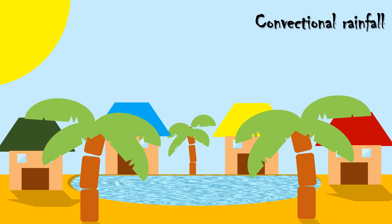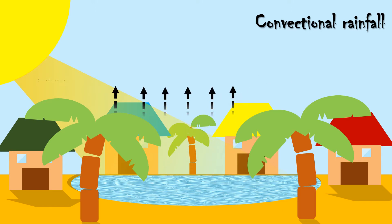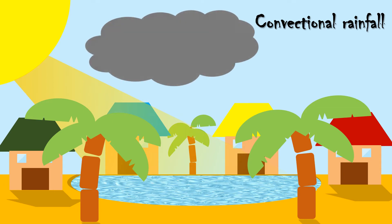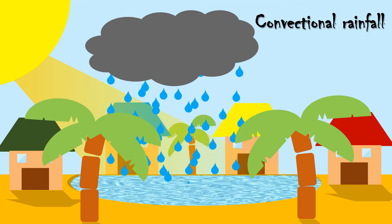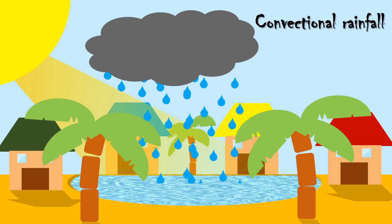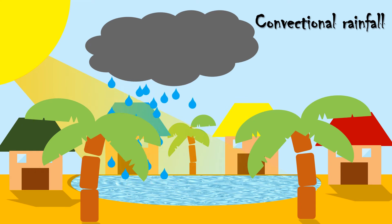Convectional precipitation or convectional rainfall is caused by a convectional ascent of warm and humid air to great heights. Most of it is in the form of rainfall. Due to excessive heating of the earth's surface in summer months, vertical air currents are produced. As the surface air rises, it expands and cools and eventually gets saturated. This is followed by condensation and precipitation. This process releases latent heat of condensation, which further heats the air and forces it to continue upward movement, leading to further condensation and precipitation.